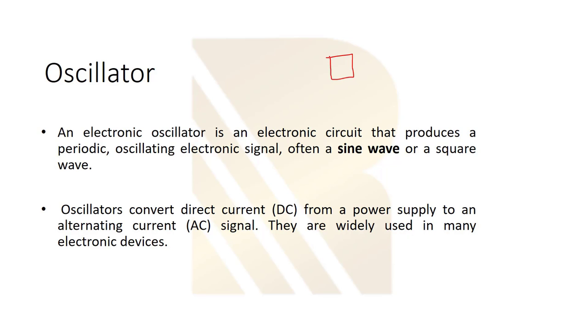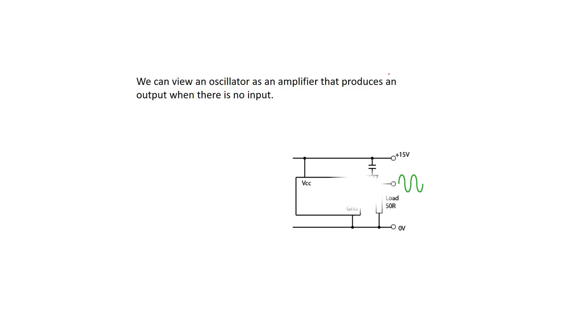Sometimes if you use an oscillator, we just have a constant frequency. But we will learn that if we design a controlled oscillator, we can also change the frequency of the wave. Oscillators convert direct current from a power supply to alternating current signal.